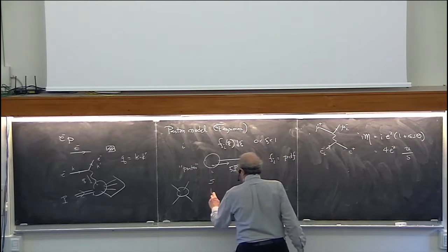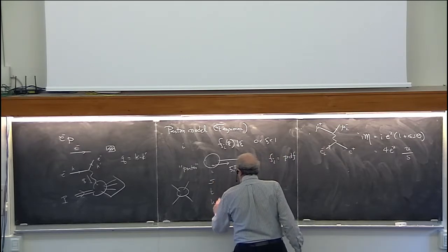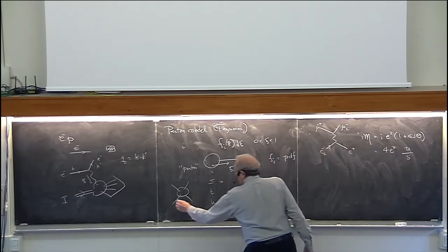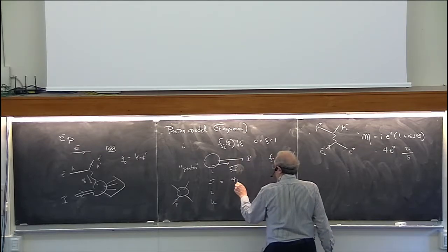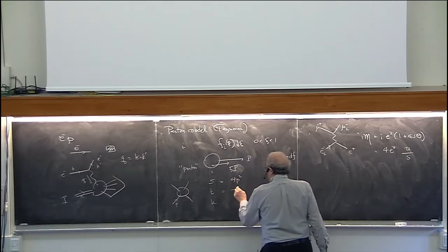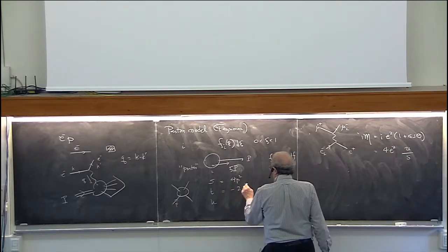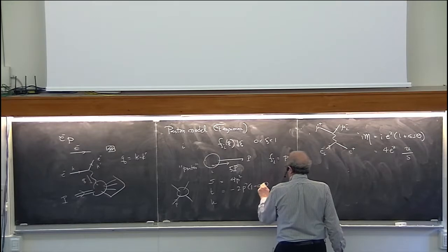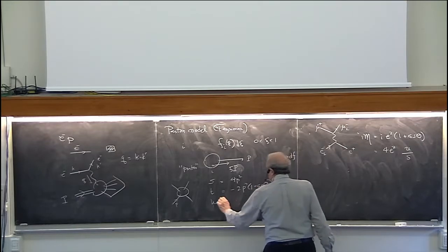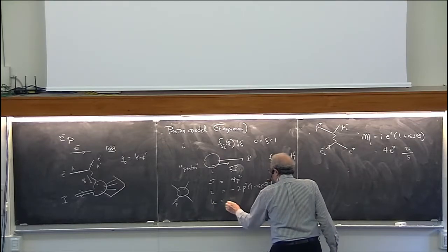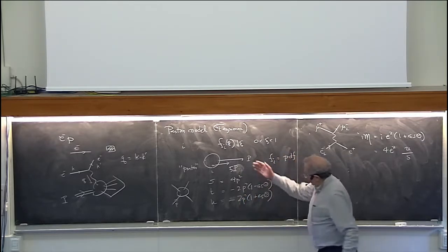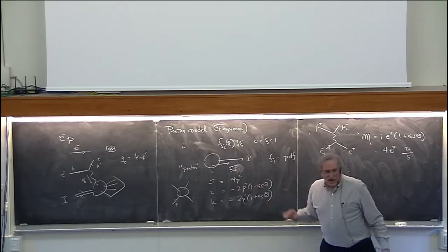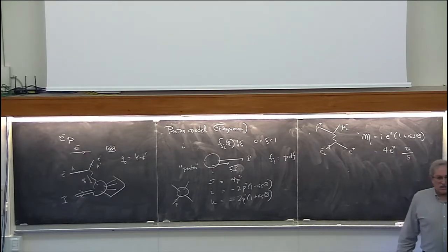It's useful to write this in terms of kinematic invariants. Let's write this as 4e squared times U over S. For a two-body reaction of massless particles, there are three kinematic invariants S, T, and U. S is 4P squared, T is minus 2P squared times (1 minus cosine theta), and U is minus 2P squared times (1 plus cosine theta). The sum of these adds up to zero for massless particles.